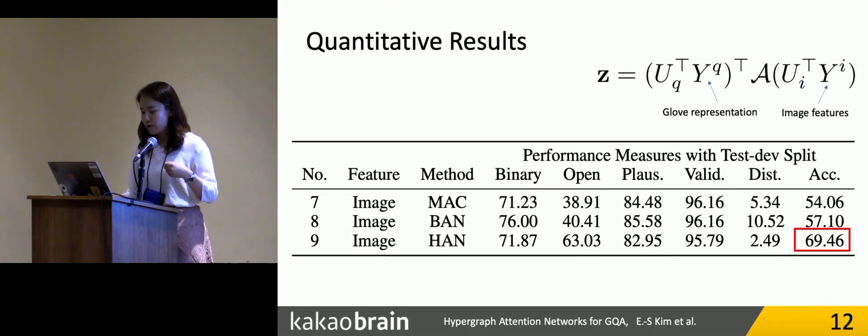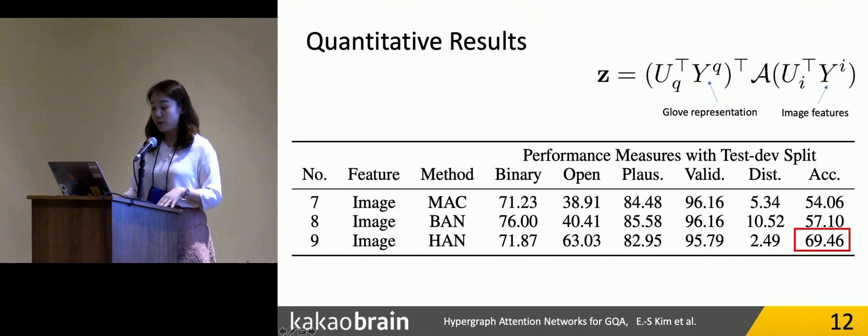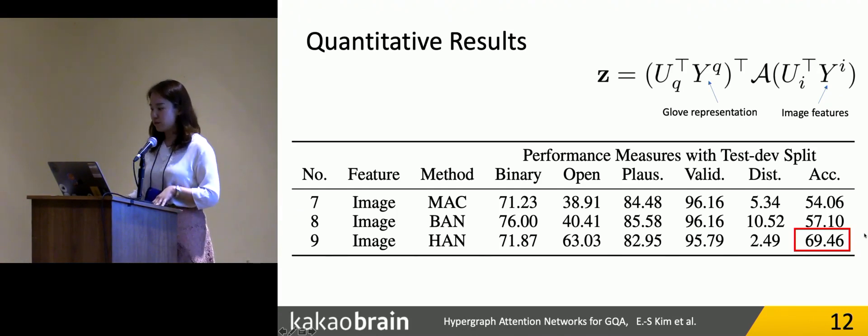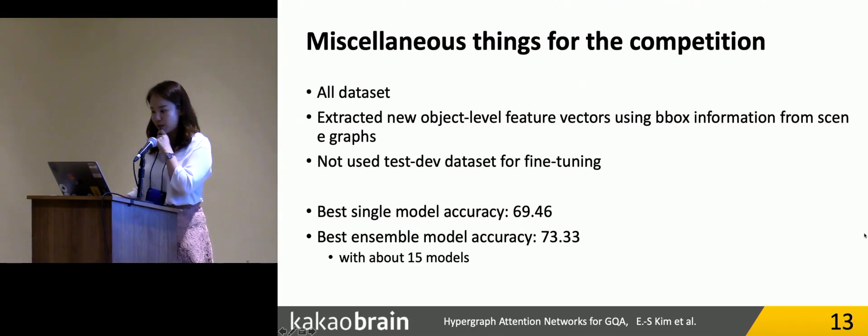For the competition, we used the image features. We combined the image features with our networks, and from those experiments, we can dramatically improve the GQA performance with HAN by about 12%.